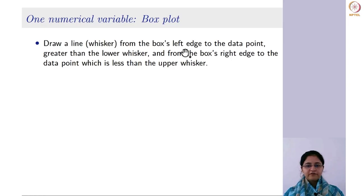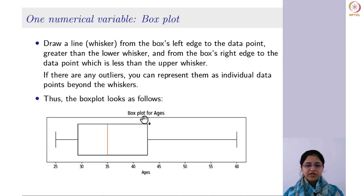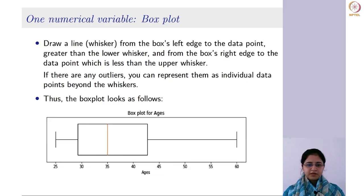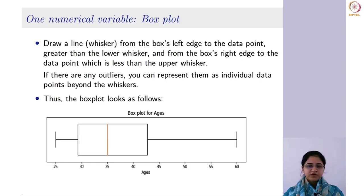You draw a line from the box's left edge to the data point just greater than the lower whisker value, and from the right side to the data point just less than the upper whisker value. In this case there is no outlier. The lower whisker value is 8, and the data point just above that is 25, since there is no other observation between them — so the whisker only goes to 25.